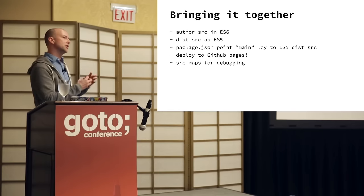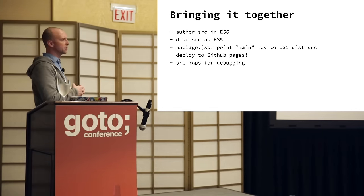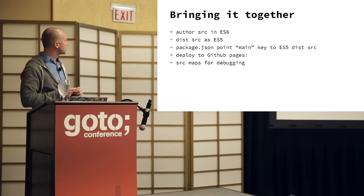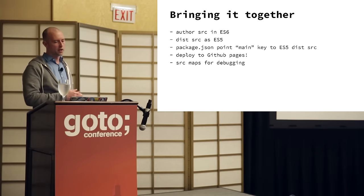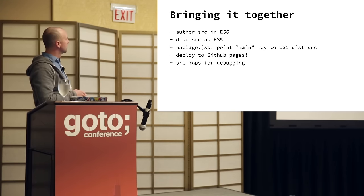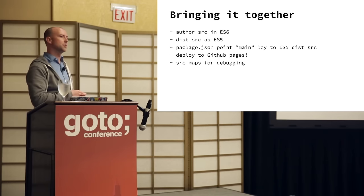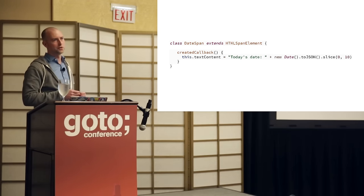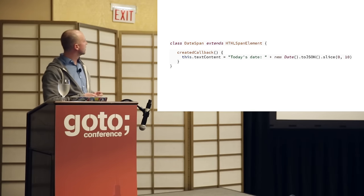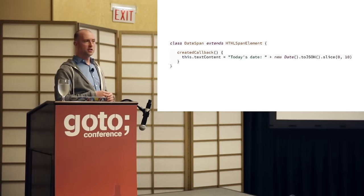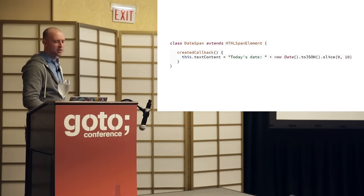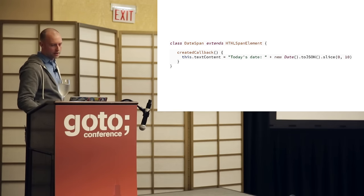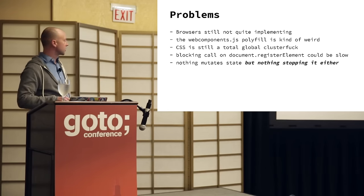If we pull all these concepts together, we can get a pretty good look at how code might be written in a few years for the web. You author your source code in ES6, compile it down to ES5, and distribute it that way. We can use package.json to point to the dist folder, deploy to GitHub Pages, and use source maps to have step debugging if we want to walk through these components. I created a trivial silly date element — I actually stole the idea from GitHub, who uses custom elements themselves for the datetime helper in their UI — and for fun I did it using ES6 syntax, just extending the built-in span element.